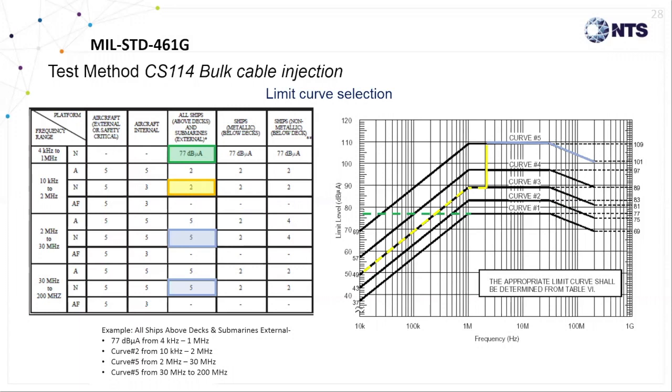You may also have noticed that the small frequency band between 4 kilohertz and 1 megahertz is only applicable to Navy ships and submarines. This test range has been added by the Navy due to low frequency common mode noise appearances on ships which utilize solid state power generation technologies.